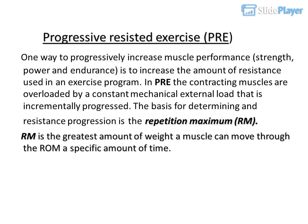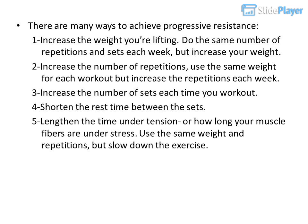There are many ways to achieve progressive resistance: 1. Increase the weight you're lifting — do the same number of repetitions and sets each week but increase your weight. 2. Increase the number of repetitions — use the same weight but increase repetitions each week. 3. Increase the number of sets each workout. 4. Shorten the rest time between sets. 5. Lengthen the time under tension — use the same weight and repetitions but slow down the exercise.